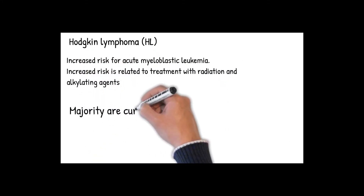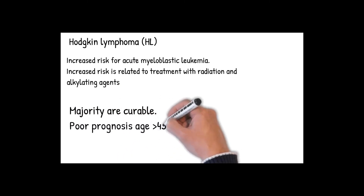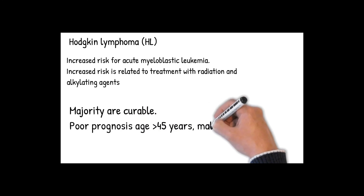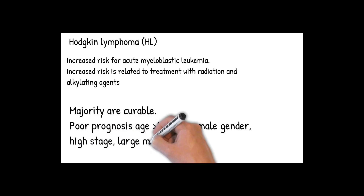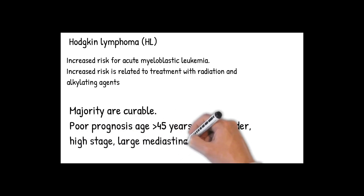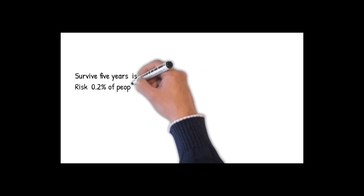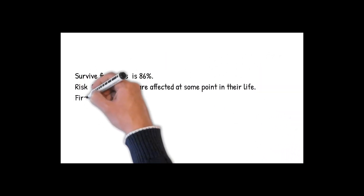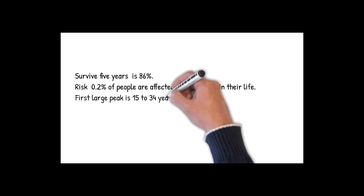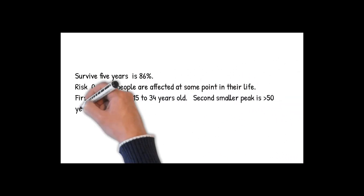The majority of Hodgkin lymphoma cases are curable. Poor prognosis correlates with age greater than 45 years, male gender, high stage, large mediastinal mass, and abnormal complete blood count including anemia and lymphopenia. Radiotherapy and chemotherapy are used depending on the stage of the disease. The five-year survival rate in the United States is 86%, and approximately 0.2% of people are affected at some point in their life. Hodgkin lymphoma is characterized by a bimodal age distribution, with a first large peak at 15–34 years old and a second smaller peak at greater than 50 years old.